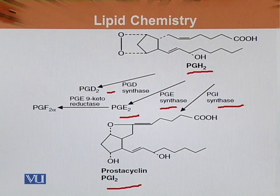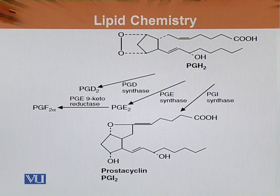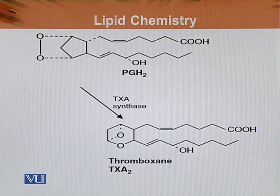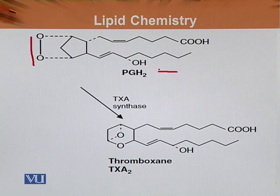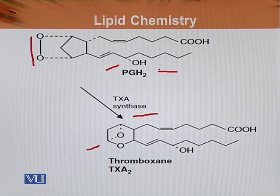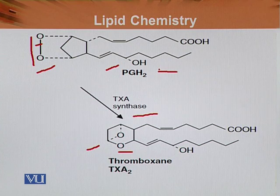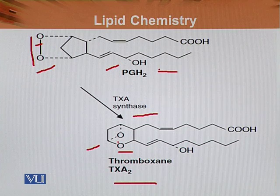PGE2 is converted into PGF2 alpha. This is the formation of different types of prostaglandins and eicosanoids from PG H2. PG H2 is also the precursor from which thromboxane is formed. In prostaglandins there are five-membered carbon rings, but thromboxane synthase acts on PG H2 and ultimately a six-membered ring is formed. One oxygen comes inside the ring to make the six-membered ring, and the other oxygen is incorporated between carbon nine and eleven, forming thromboxane A2 from the parent compound arachidonic acid via the cyclooxygenase pathway.